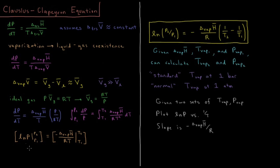We can rearrange this result into the following result. The natural log of P2 over P1 equals the negative enthalpy change of vaporization divided by the gas constant times 1 over T2 minus 1 over T1.